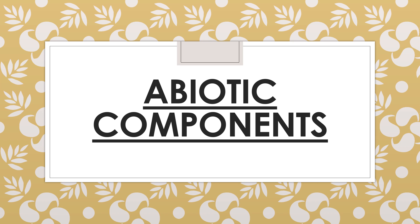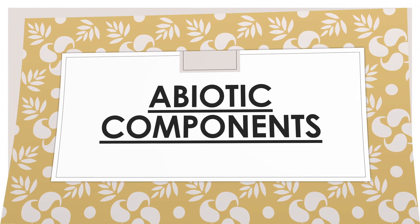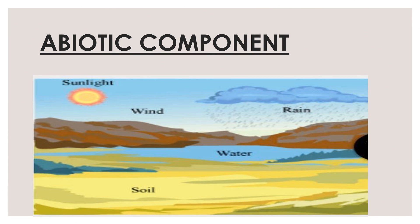Hello, my dear students. This is the next part of my topic: the ecosystem. In the first video I explained the biotic component of the ecosystem, in the second video I covered food chain and food web, and now I'm going to explain the abiotic component of the ecosystem. Non-living things in the environment are called the abiotic component.